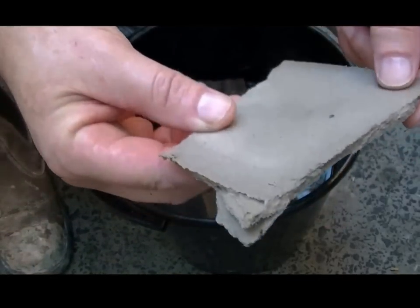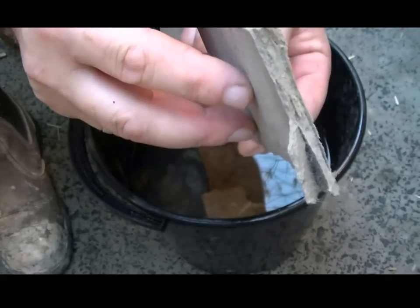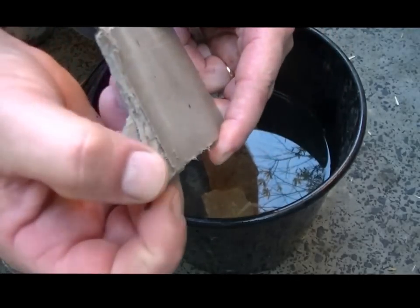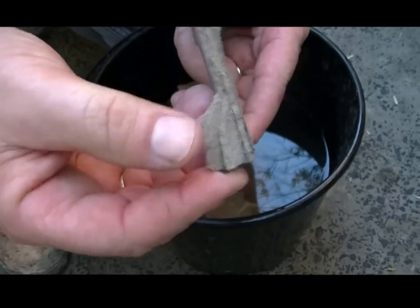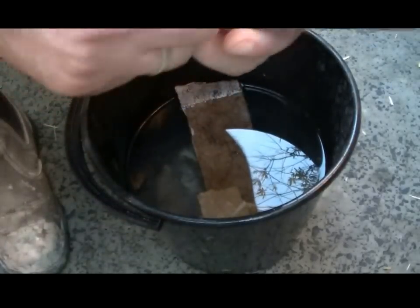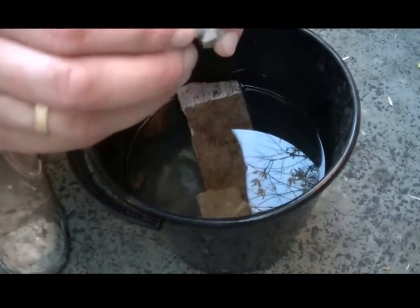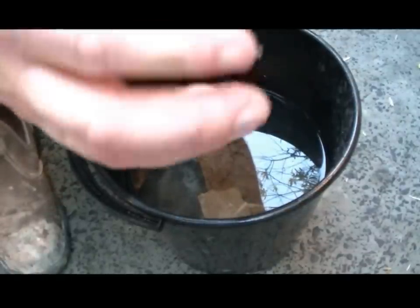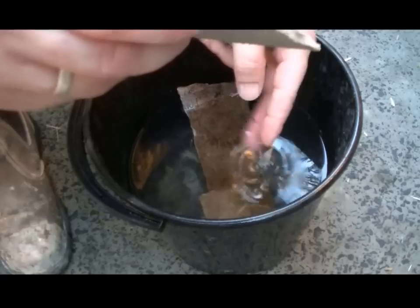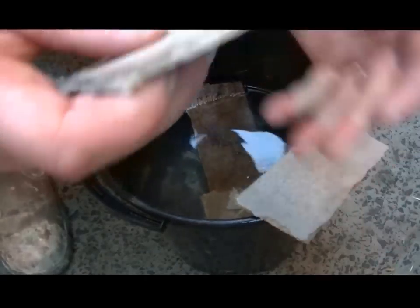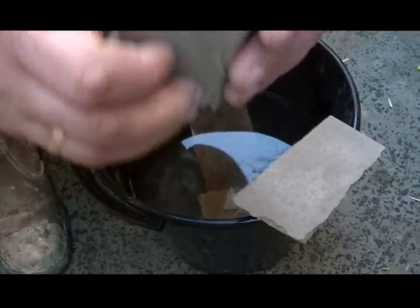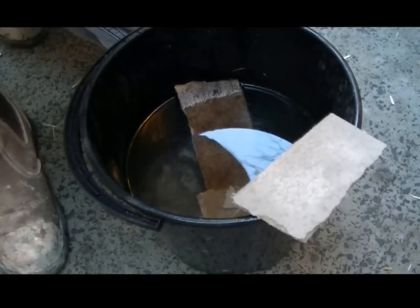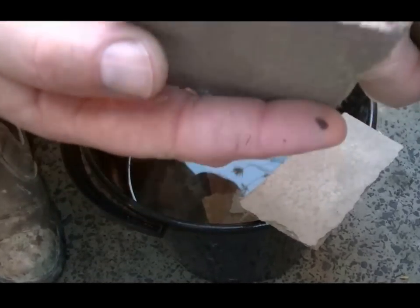You can see it's got layers to it, layers and layers. You can almost peel those layers off. Those layers - that is the way to tell if it's asbestos or not.